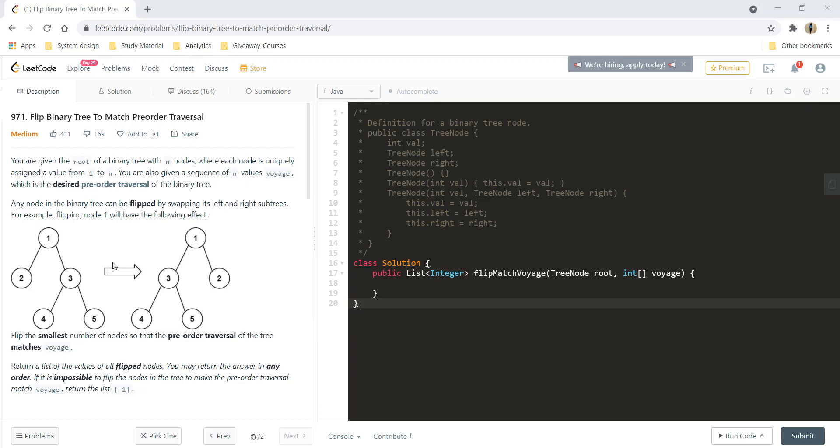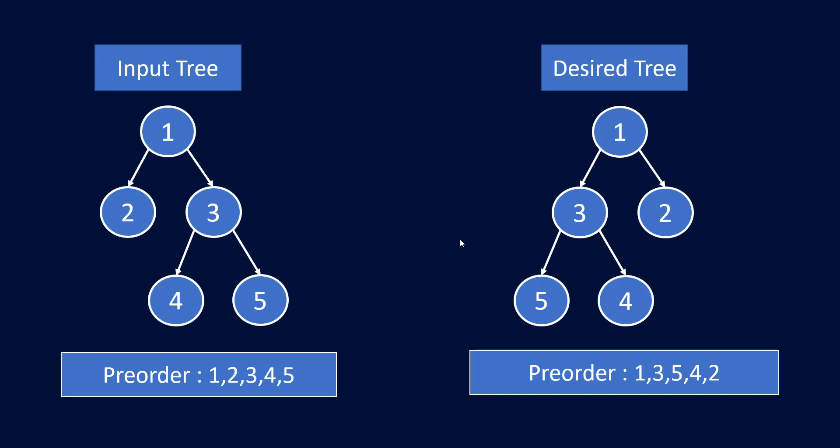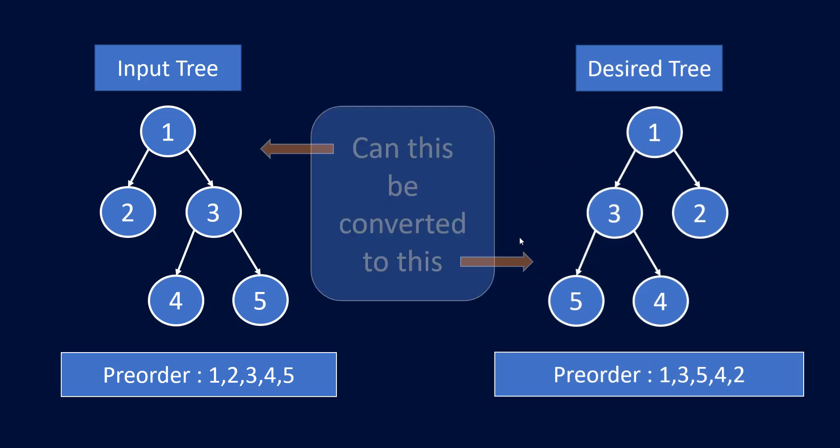What this question is asking from us to do with an example. The question has an input tree given to us and a pre-order traversal for the desired tree. I have mapped this pre-order traversal into the tree that it would represent. Now the question is to tell, can this particular input tree be converted into the desired tree?